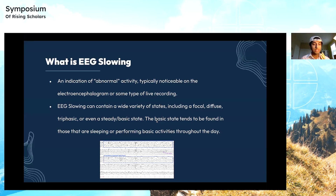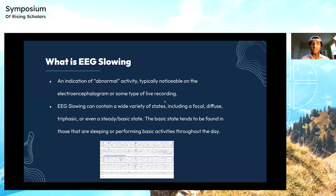It's very niche, and sometimes, especially for doctors, it's hard to distinguish between, let's say, the steady or basic state versus perhaps the focal or diffuse state or another state found in Alzheimer's. This can be very problematic, especially if they want to use it for early detection, because these EEG slowing states are actually found in Alzheimer's and dementia. The biggest problem is being able to determine which EEG slowing type is which based on clear measures.